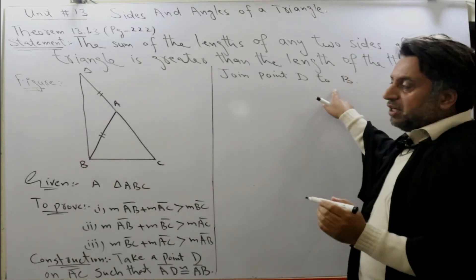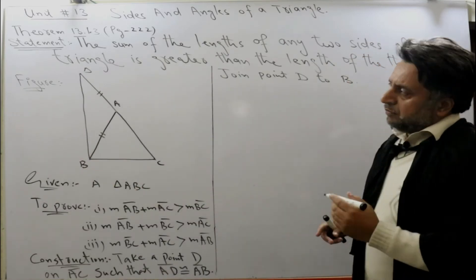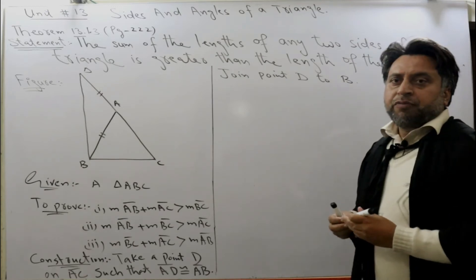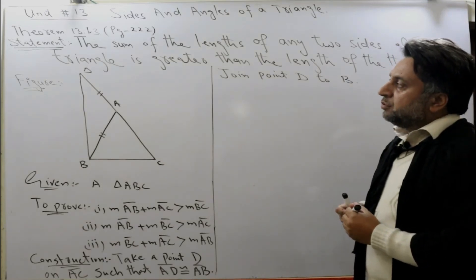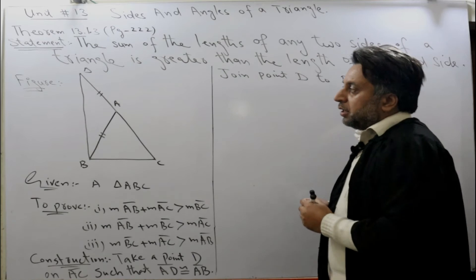Join point D to B. In construction, when we extend any line or join any two points, we use broken lines or dotted lines.